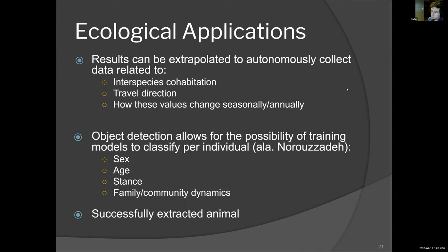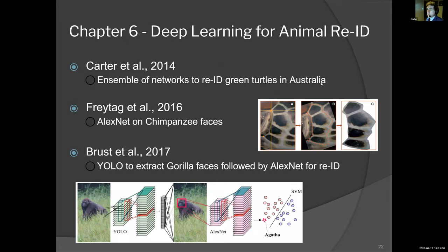With training of additional classifications relative to sex, age, youth versus adults, and stance, you could start training machine learning models to pull out information related to family and community dynamics automatically from camera trap data. We've now been able to successfully extract animal individuals from camera trap data, so now we're actually on to the task of re-ID.